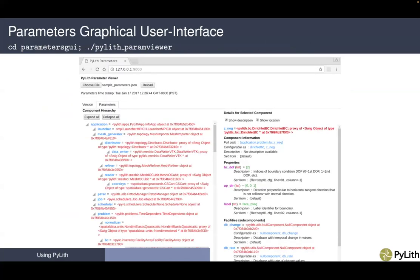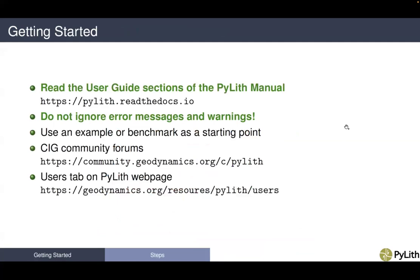This is what the parameter viewer looks like. Running on a local machine, you can scroll up and down the hierarchy of parameters, look at specific values, and get information about what properties and facilities can be set, what the default values are, what the type is, and descriptions. We'll cover this in our examples.